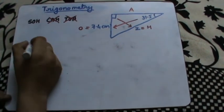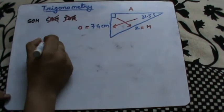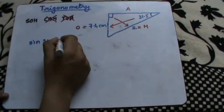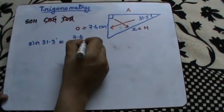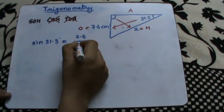I'll use that: sin 31.3° equals O over H. O is 7.4 and H is Z. Z is the unknown I need to find out.